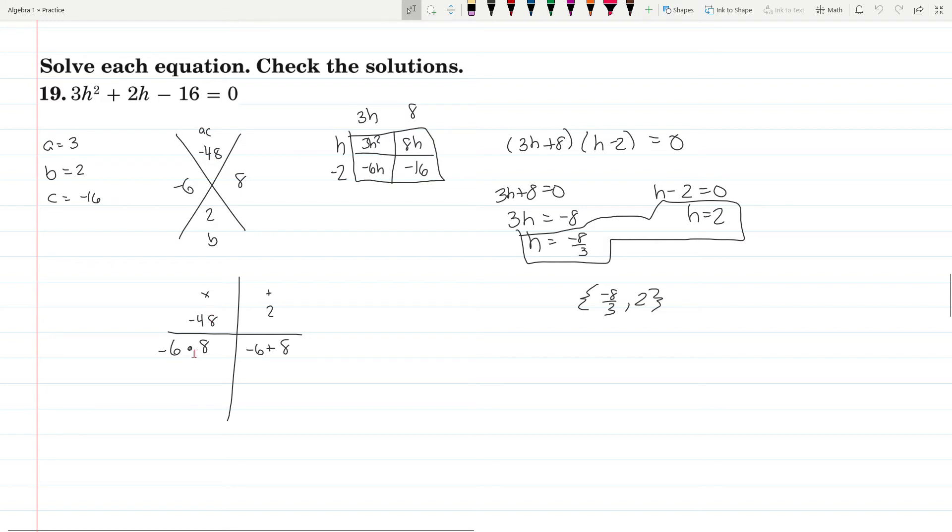Well, negative 6 times 8. So we have 3h squared and our negative 16, we have 8h and negative 6h, and then pull these out. 3h and 8, h and negative 2. So now you have 3h plus 8 times h minus 2. And now we're not done, that equals 0. Each of these parts we're going to set equal to 0. So 3h plus 8 equals 0 and h minus 2 equals 0.